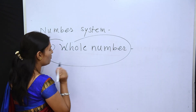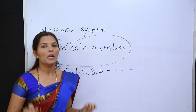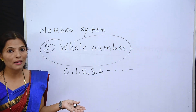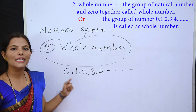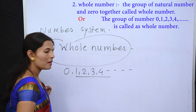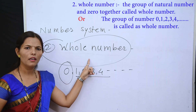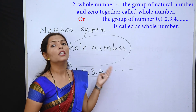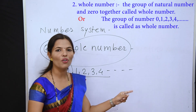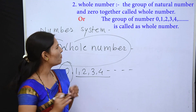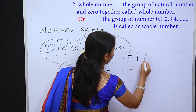Whole number always starts from 0, 1, 2, 3, 4 up to infinity. The definition of whole number: the group of natural numbers plus 0 is called as a whole number. Here is another simple definition: the group of numbers 0, 1, 2, 3, 4 is called as a whole number. Whole number is shown by the letter W, because W is the starting letter of whole number.